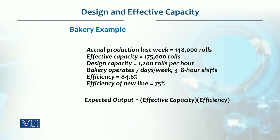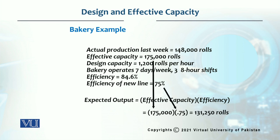Now, on this same basis, if we say that we have purchased a new machine or a new line, and the efficiency of that new line is claimed to be 75 percent, then what output should we expect? That is basically effective capacity multiplied by efficiency. So effective capacity is 175,000 and efficiency is 0.75, so the actual production should be 131,250 rolls per week.